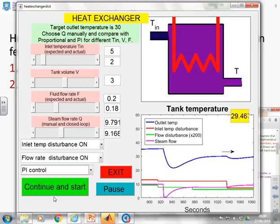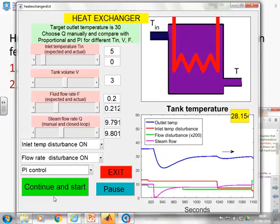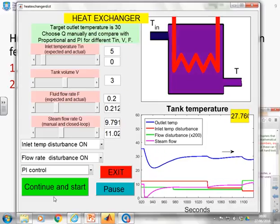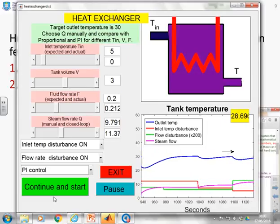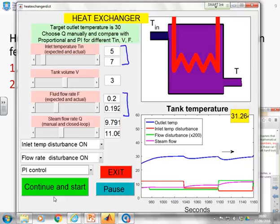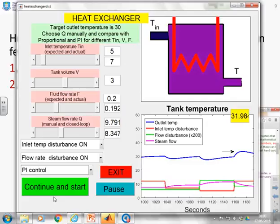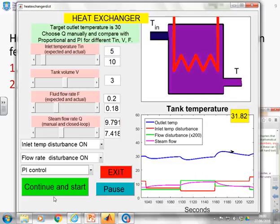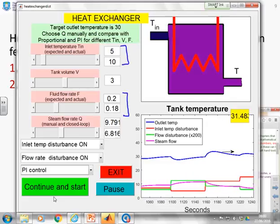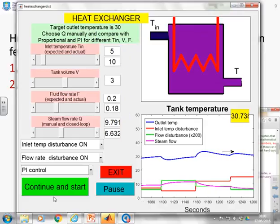And you'll notice that when the perturbations happen, when the inlet temperature and the flow change, obviously you'll get a transient bump. But the PI is bringing you back effectively and smoothly. And it's going to keep doing that all day. It's not going to get tired. Whereas if you had to do this manually you're going to struggle.